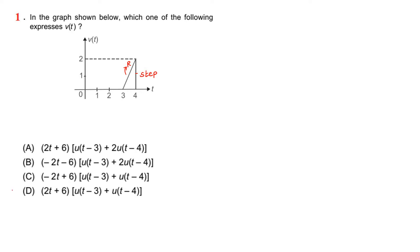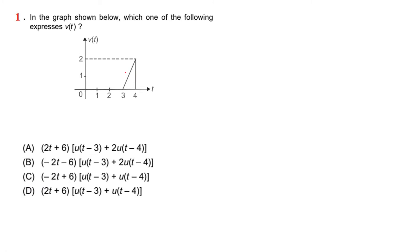In step number 1, find the slope of the ramp signal. What is the slope given? 2 divided by 4 minus 3, that is 1. The slope is the rising slope plus 2. And here, the slope is 0, and here also 0 slope.